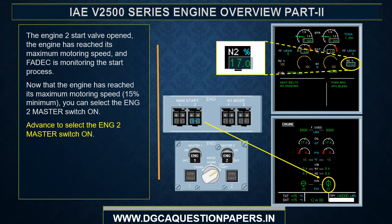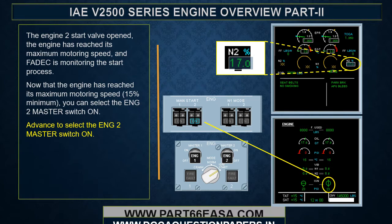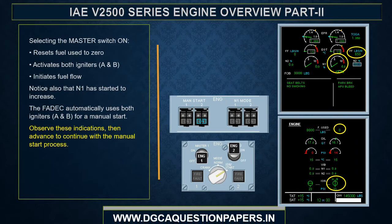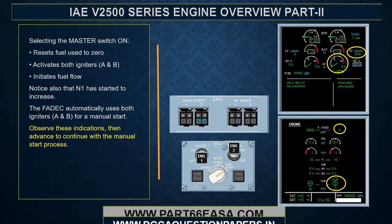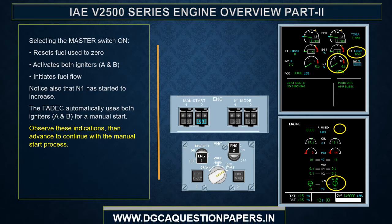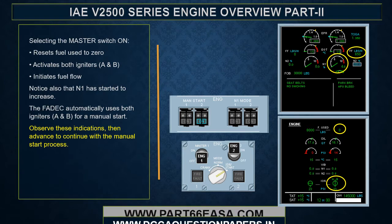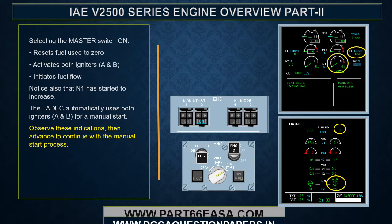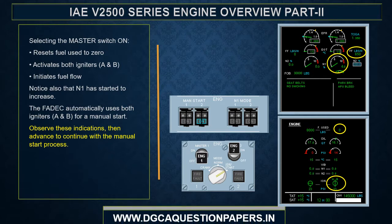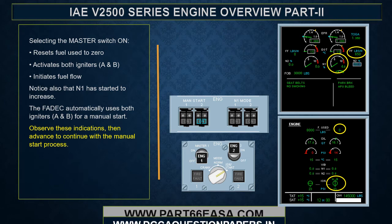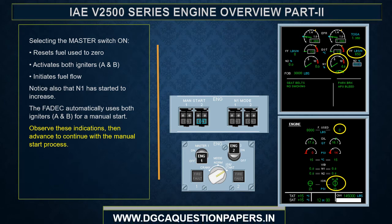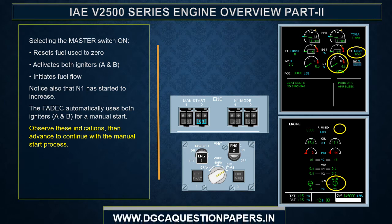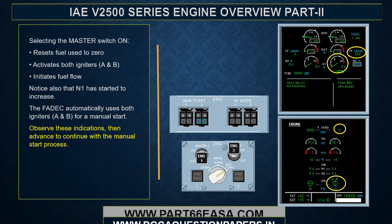Selecting the master switch on resets fuel used to zero, activates both igniters A and B, and initiates fuel flow. Notice also that N1 has started to increase. The FADEC automatically uses both igniters A and B for a manual start.